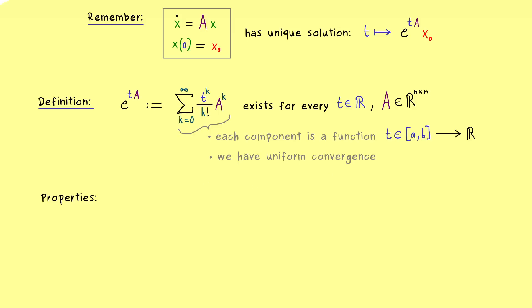Indeed it implies that our matrix exponential is a differentiable function. We can quickly show that and also calculate the derivative of e to the power tA with respect to t. So we would write d/dt of the matrix exponential.